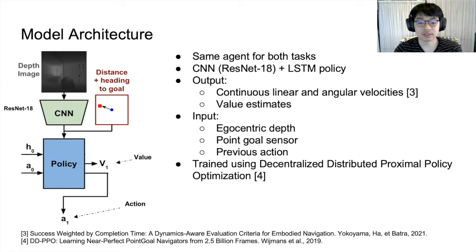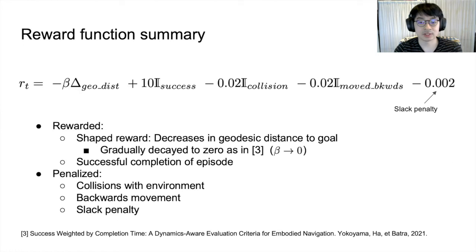The agent was trained using decentralized distributed PPO. For our reward function, the agent received a shaped reward for closing the geodesic distance to the goal at each step. This portion of the reward function is gradually decayed to zero as training progresses to encourage faster completion speeds rather than shorter paths, as done in the success weighted by completion time work. It also received a terminal reward for reaching the goal and was penalized for colliding with the environment or moving backwards. A constant slack penalty at each time step also encourages the agent to complete the task as soon as possible.